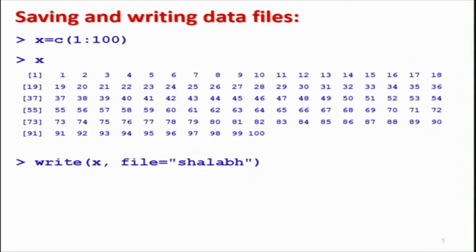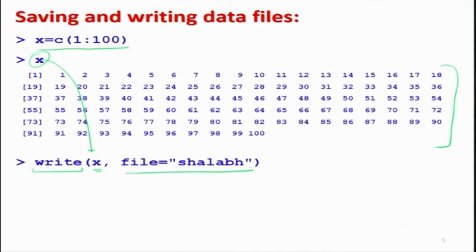Let's try to understand the write function with a small example. I have taken a data vector x with some values. After this, I have used the write function. We write 'write(x', then we write 'file = "shalabh"'. This will save the outcome to a file named shalabh. We will show you the different options and demonstrate what kind of output is produced.